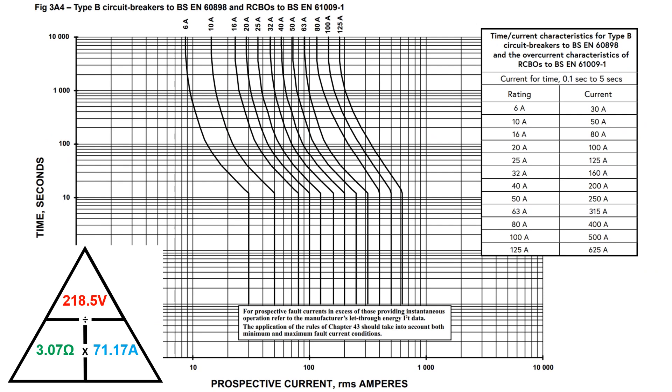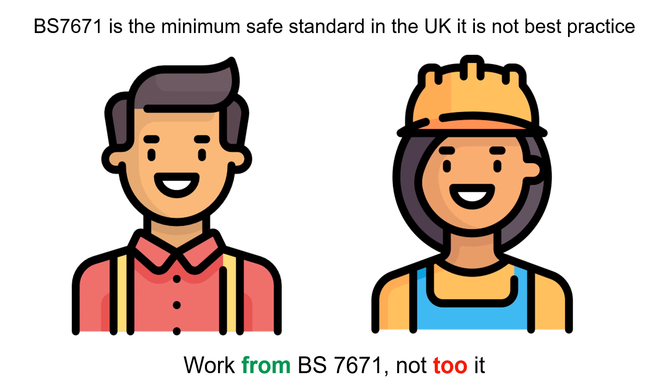looking in BS7671, Appendix 3, at the time-current characteristics of overcurrent protective devices, figure 3A4 gives the characteristics for MCBs and RCBOs. We can now see that if we plot a line from around 70 ohms, it will now take around 15 seconds to operate the protective device. That is 3 times longer than it should be. So as you can see, it does not actually make sense to avoid carrying out R1 plus RN testing on radio circuits. But please consider this as you continue with your career as an electrician, because you can make a difference within the industry.